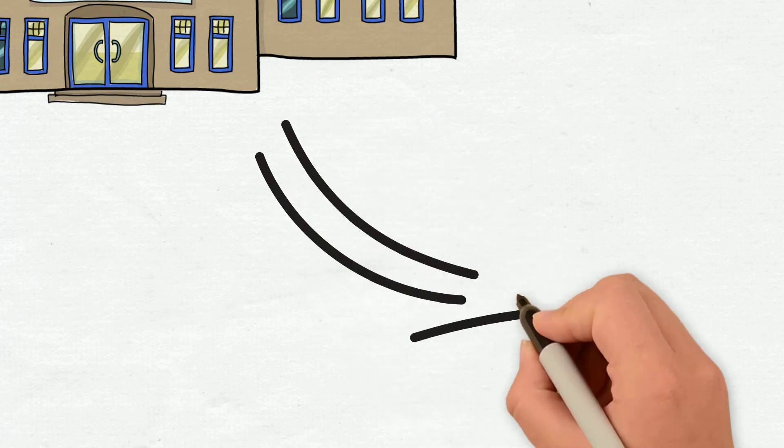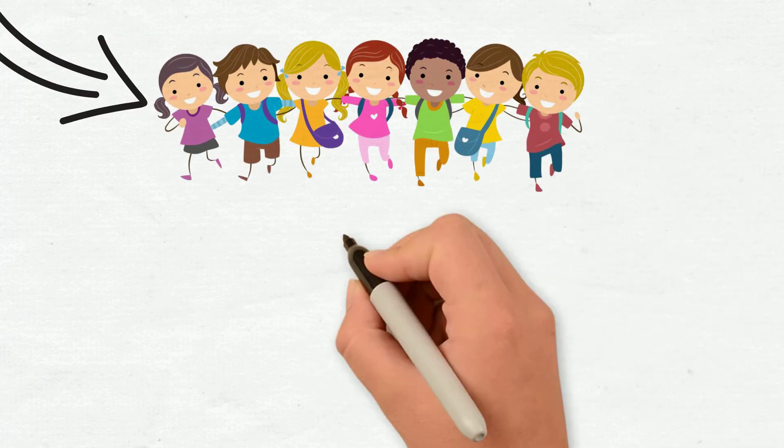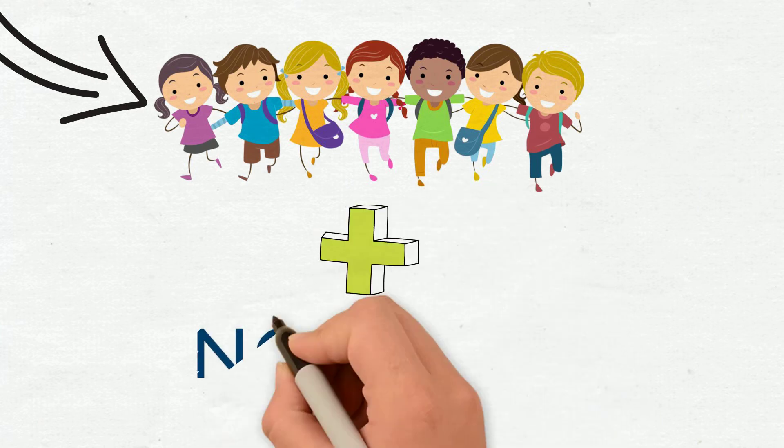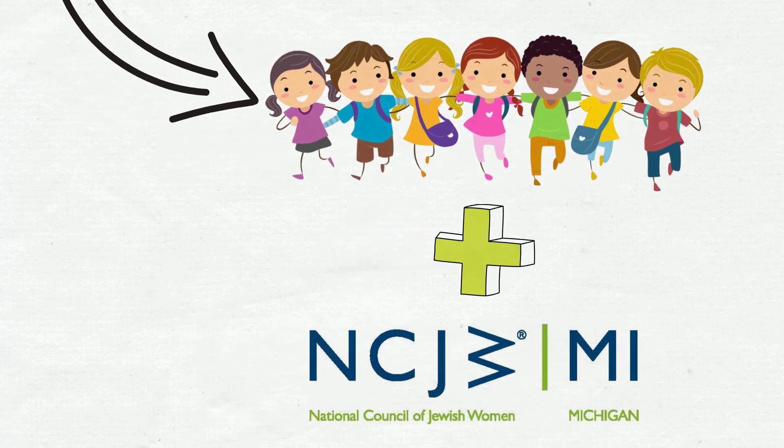For the last four years, the National Council of Jewish Women Michigan, along with local partner organizations, has helped elementary-aged children in the city of Detroit start school on the right foot and with the tools they need to succeed.